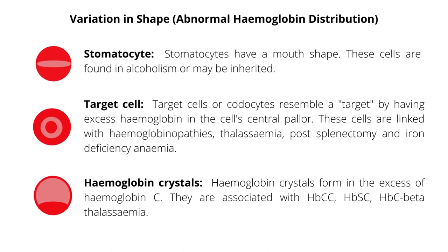Abnormal hemoglobin distribution can also alter the shape of red blood cells. Stomatocytes have a mouth shape due to the abnormal distribution of hemoglobin. These cells are found in alcoholism or may be inherited. Target cells or codocytes resemble a target by having excess hemoglobin in the cell's central pallor. These cells are linked with hemoglobinopathies, thalassemia, post-splenectomy, and iron deficiency anemia. Hemoglobin crystals form in the excess of hemoglobin C and are associated with hemoglobin C disease, hemoglobin SC disease, and hemoglobin C beta-thalassemia.